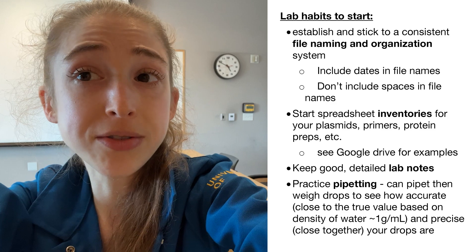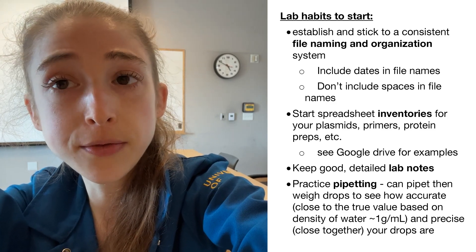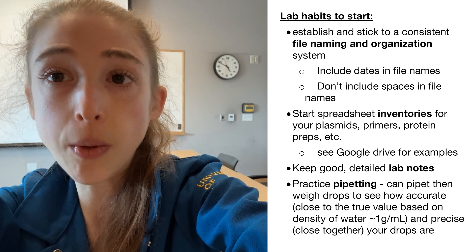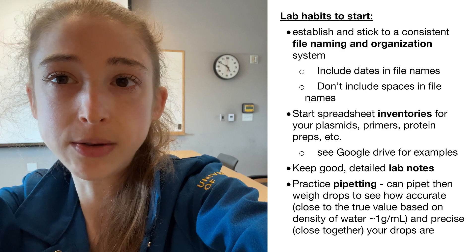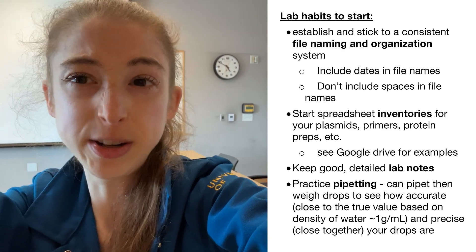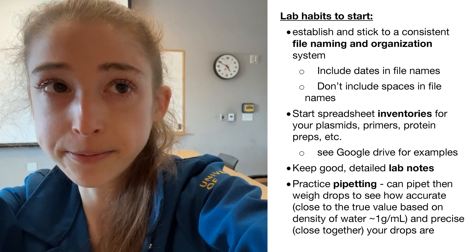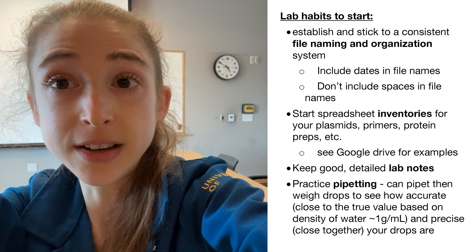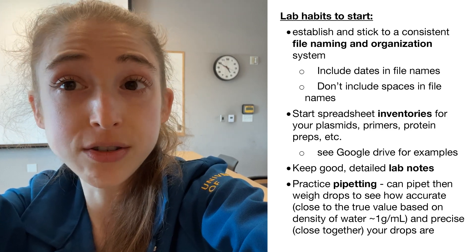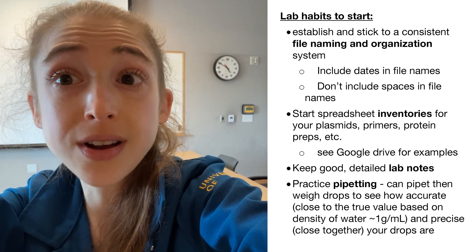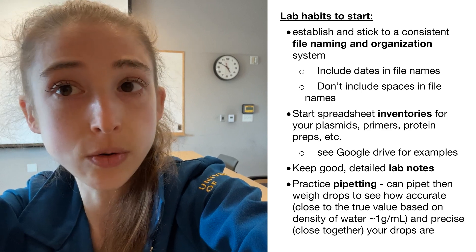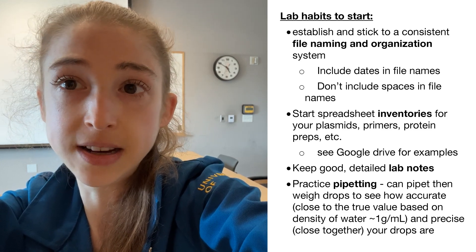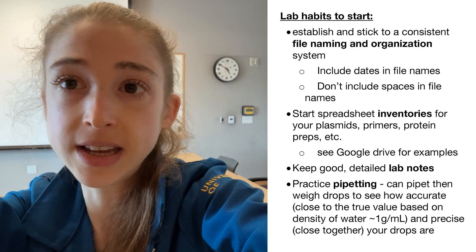You want to make sure you're keeping really detailed notes. Check out my post on note-keeping for more, but detail when something went weird in an experiment, exactly what you did, what reagents you used, what preps they came from, what lot of antibody it was — really important details. Also establish a consistent file naming and organization scheme. Include dates in your file names so you can cross-reference your notes and data. Do not include spaces in file names or folder names, as this causes problems in command line — use underscores instead.